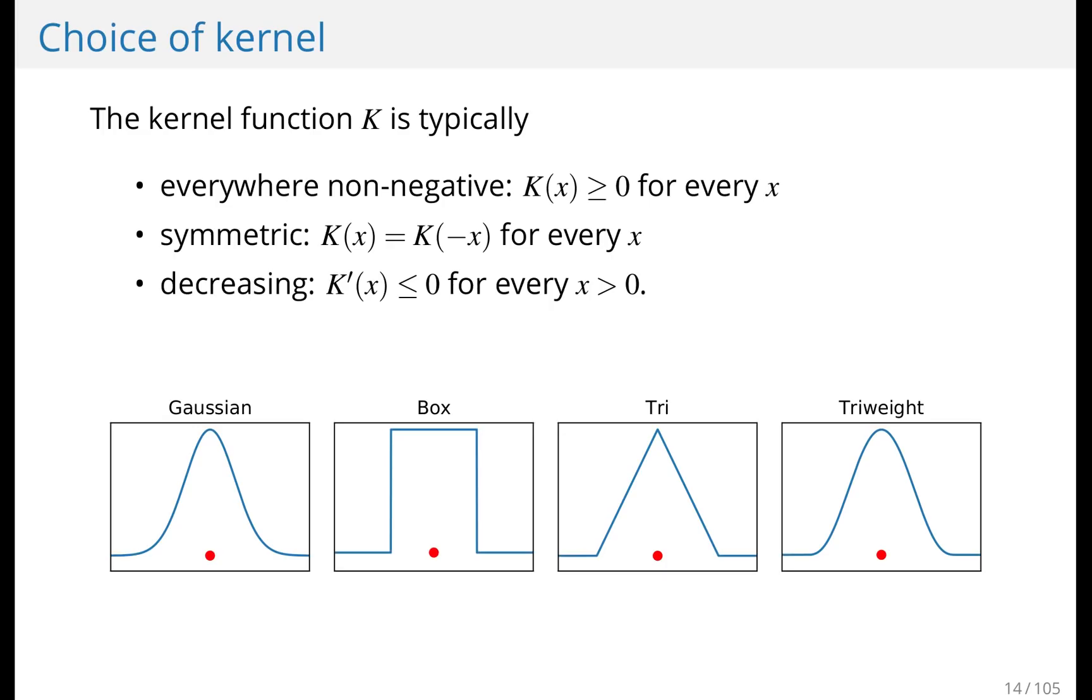The kernel function can vary. Typically you require these three things of a kernel function. It should be non-negative because a probability is always non-negative. It should be symmetric, meaning that if you go to the left or right of your data point, the kernel should have the same value. And it should be decreasing so that when you go away from the data point, the kernel goes closer to zero.